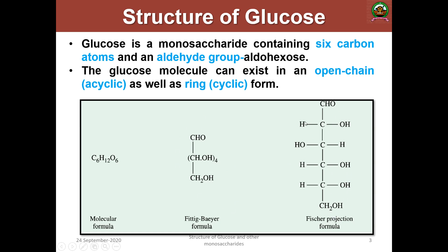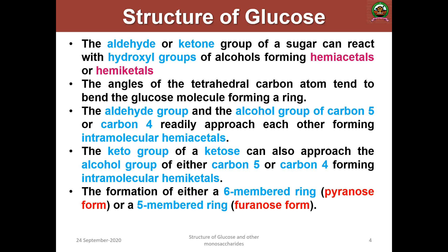In the Fischer projection formula, at the top is CHO; at carbon 2, H on the left and OH on the right; at carbon 3, OH on the left and H on the right; at carbon 4, H and OH; at carbon 5, H and OH; and at the bottom, CH2OH. This is the structure of glucose. The Fischer projection formula is widely accepted. The aldehyde or ketone group of a sugar can react with the hydroxyl group of alcohol, forming a hemiacetal or hemiketal.